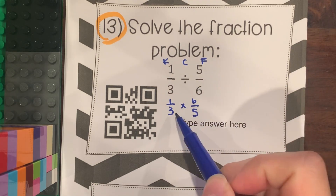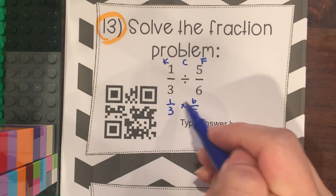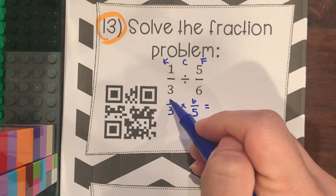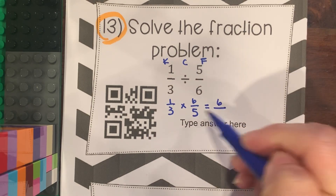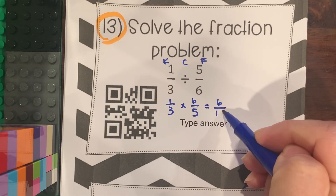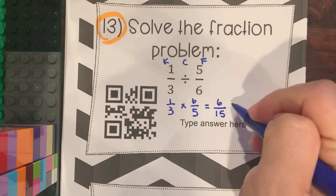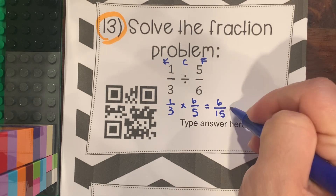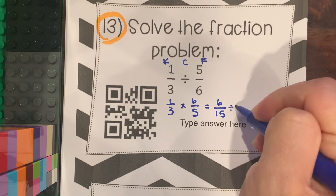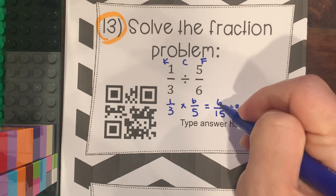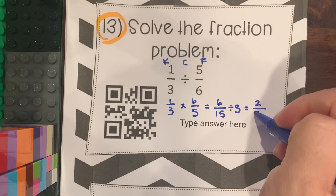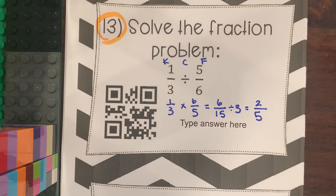At this point you have an option. You can just multiply across. So 1 times 6 is 6, and 3 times 5 is 15. Then simplify this fraction. A common factor that goes into 6 and 15 is 3. So 6 divided by 3 is 2, and 15 divided by 3 is 5, so the answer is 2/5.